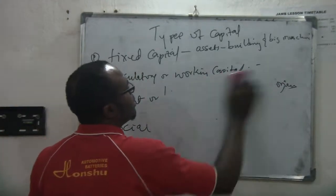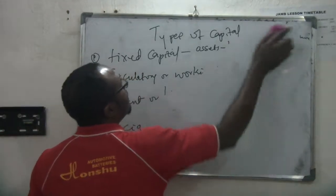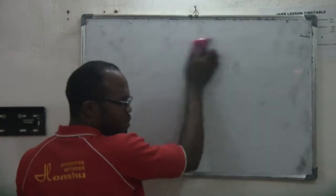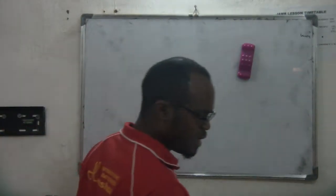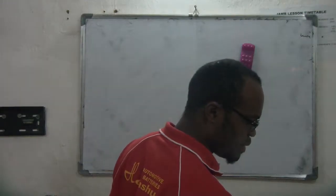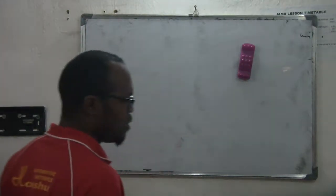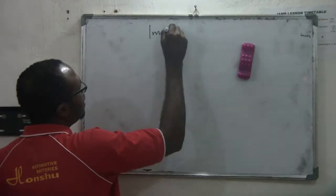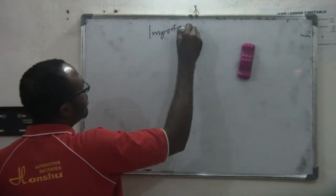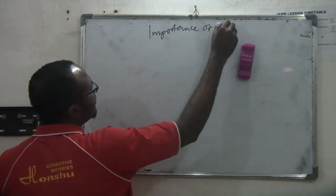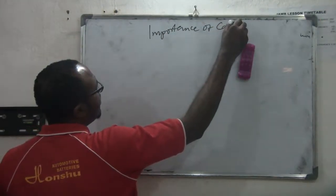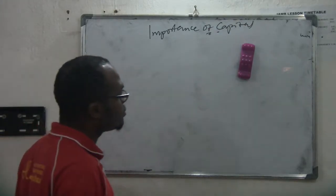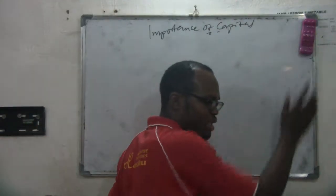The circulatory capital covers other things that you use in working. The working capital is the money that you use in paying your staff and doing all those things, buying small supplies. Social capital is things like roads and electricity that you need.